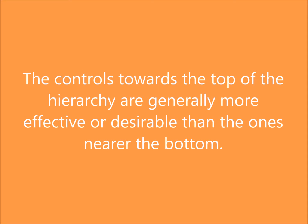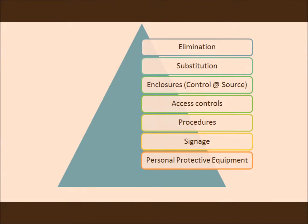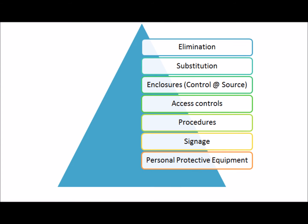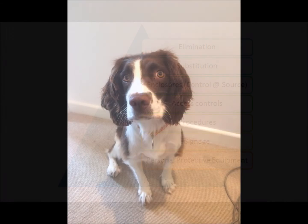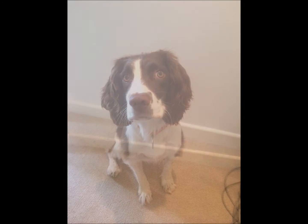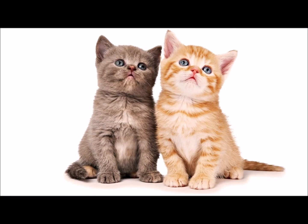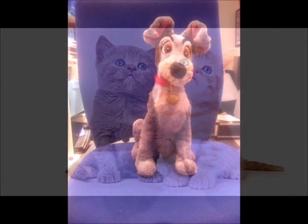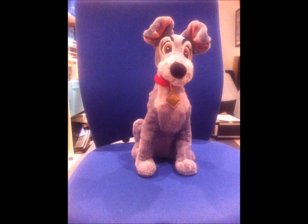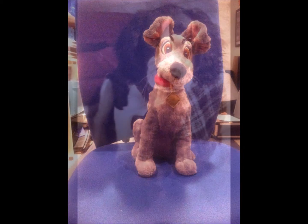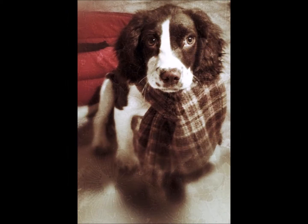Most versions of the hierarchy begin with eliminating the hazard. For example, to eliminate the hazard of a biting dog, we get rid of the dog. The next control type would be substitution — maybe a cat or something less likely to bite. We might consider reducing the risk with a smaller bite and get a smaller dog.